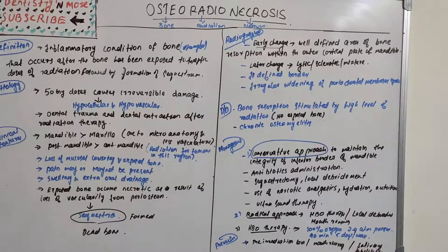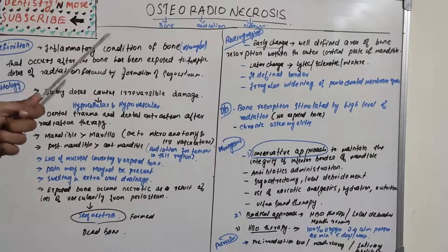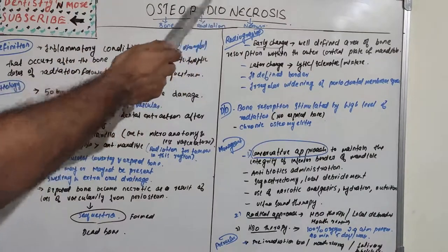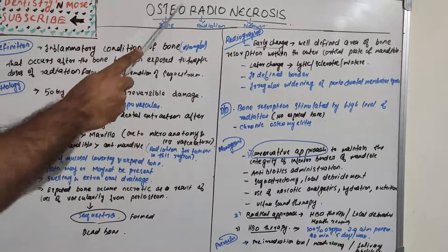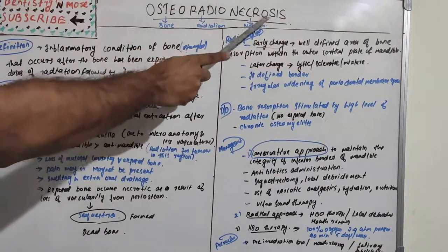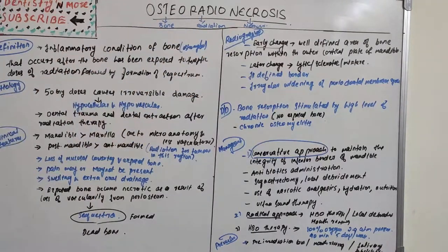Welcome back to another session of Dentistry and More. Today's topic is osteoradionecrosis, which comes under oral pathology. The name itself gives a clue: it is a necrosed bone due to radiation. Osteo means bone, and osteoradionecrosis refers to the formation of a dead or necrosed bone due to radiation.